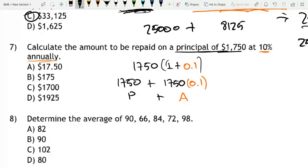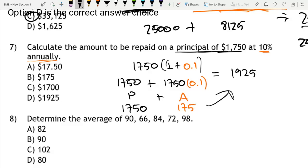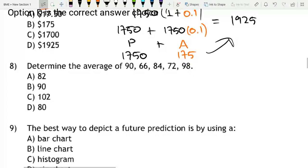And this is equal to $1,925. Because $1,750 times by 0.1 is $175. And $1,750 plus $175 is equal to $1,925. Principal plus accumulated interest is our final answer.